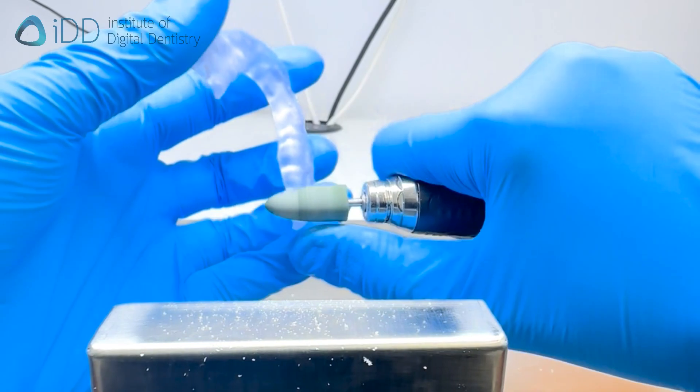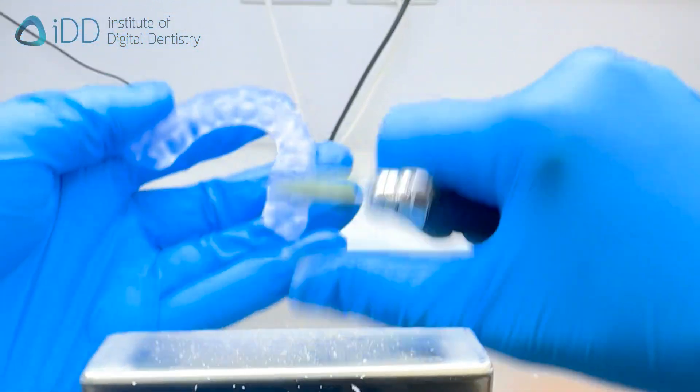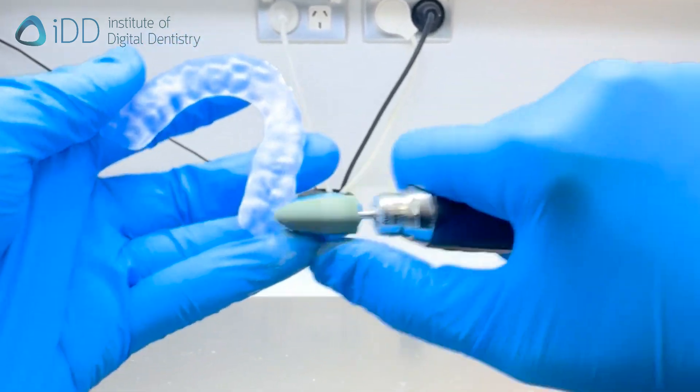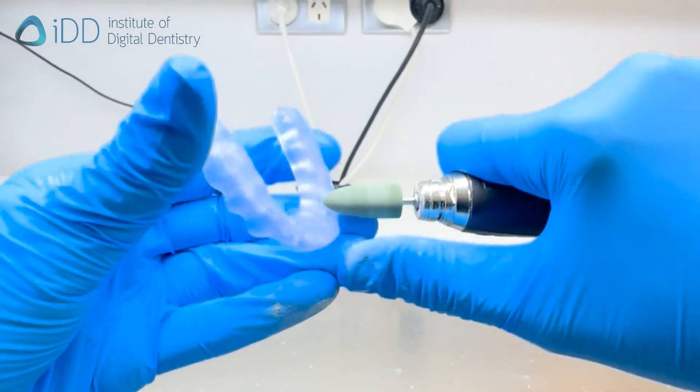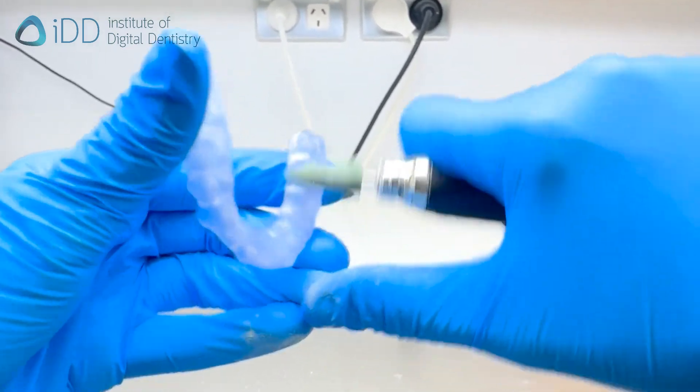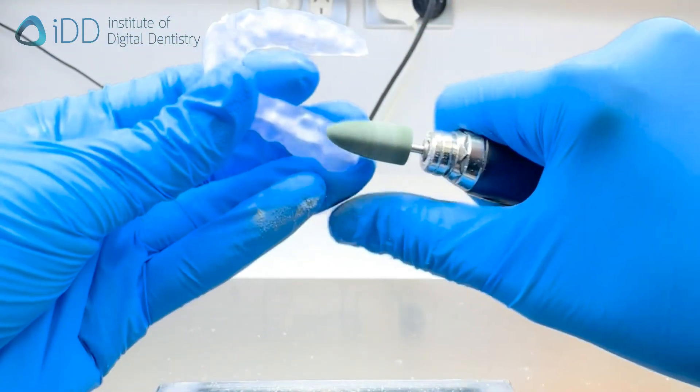Take it to the workbench and remove the remaining supports or any type of irregularity on the surface of the splint. Finish it off by using a silicone polisher lightly. We use gentle pressure so we don't modify the occlusal contacts that were designed previously. Then use a lathe to give an even smoother and more uniform surface to the splint.